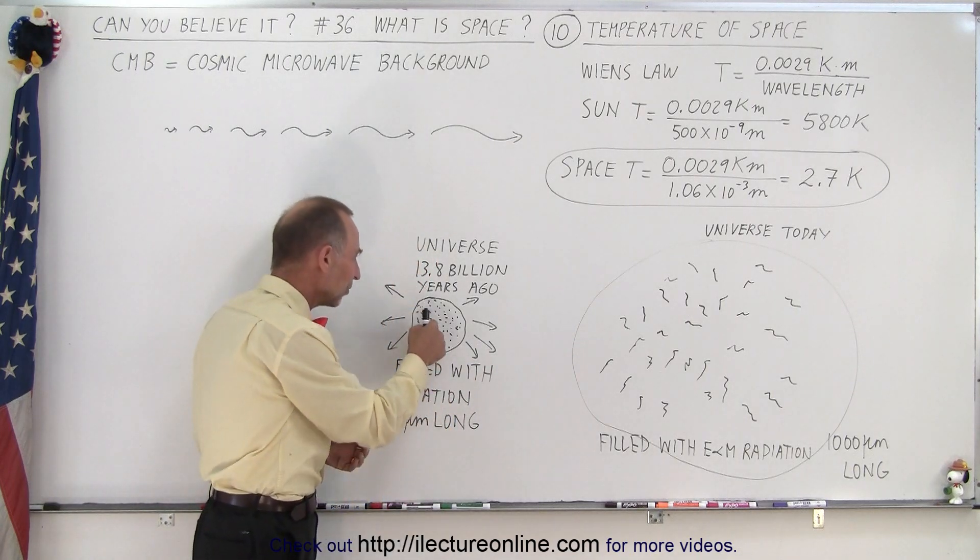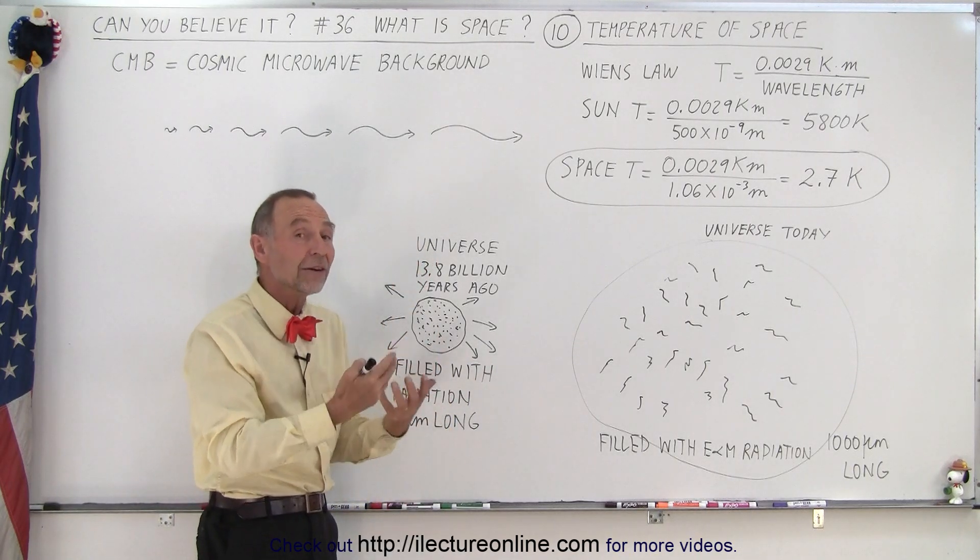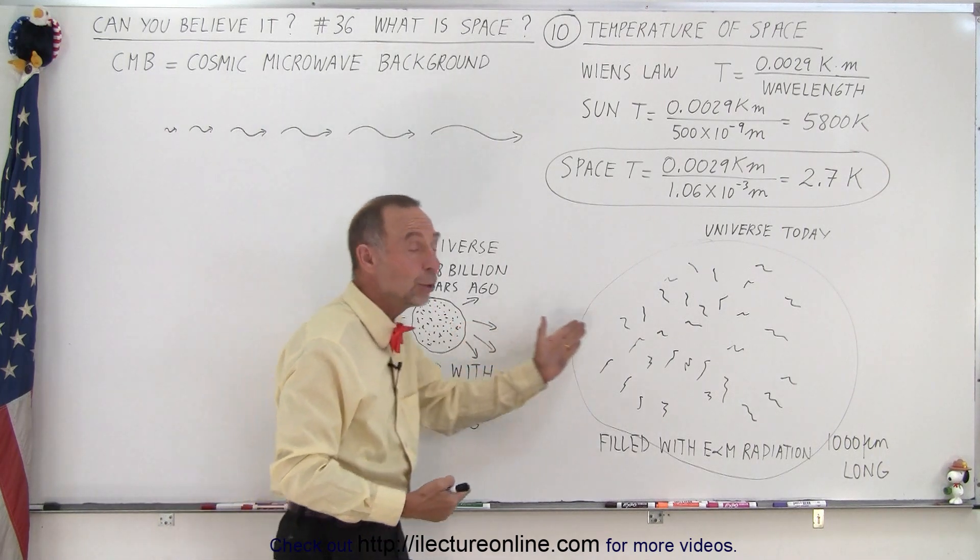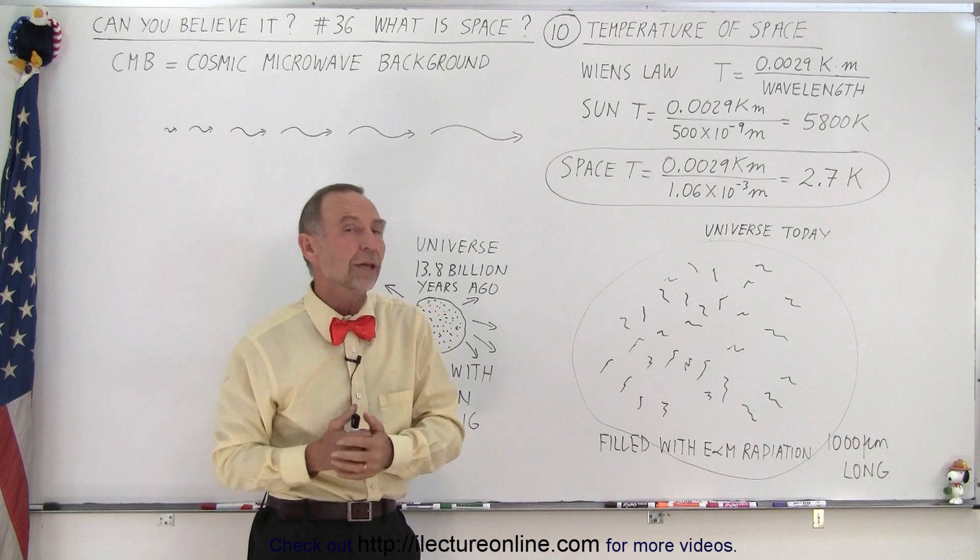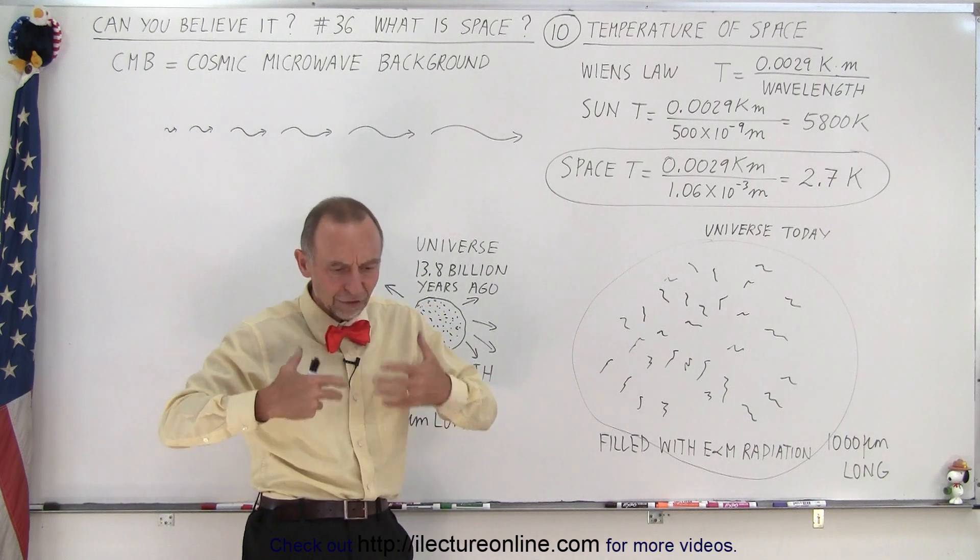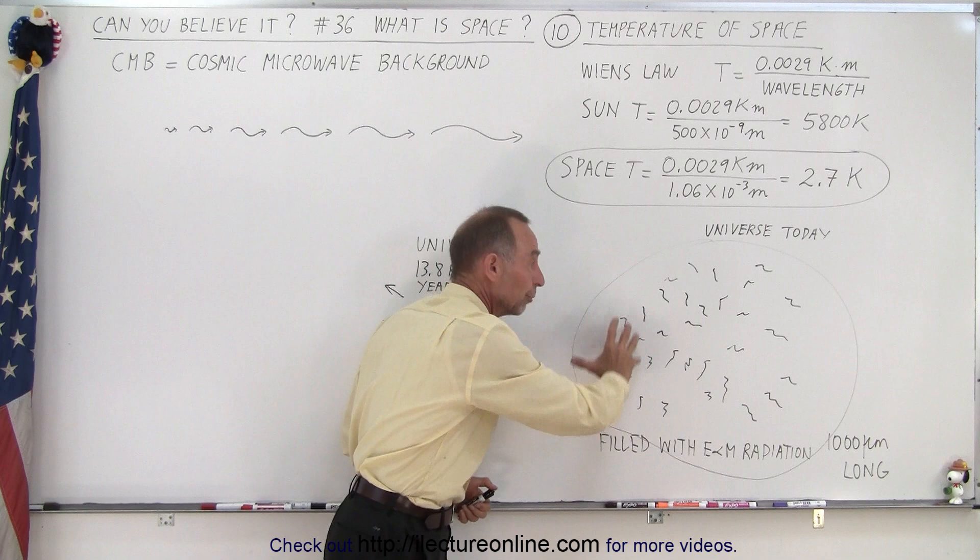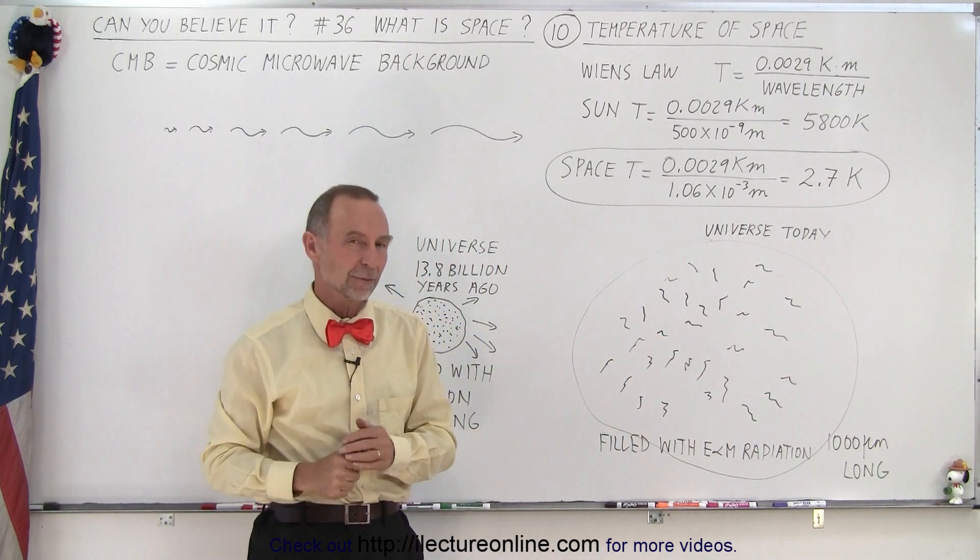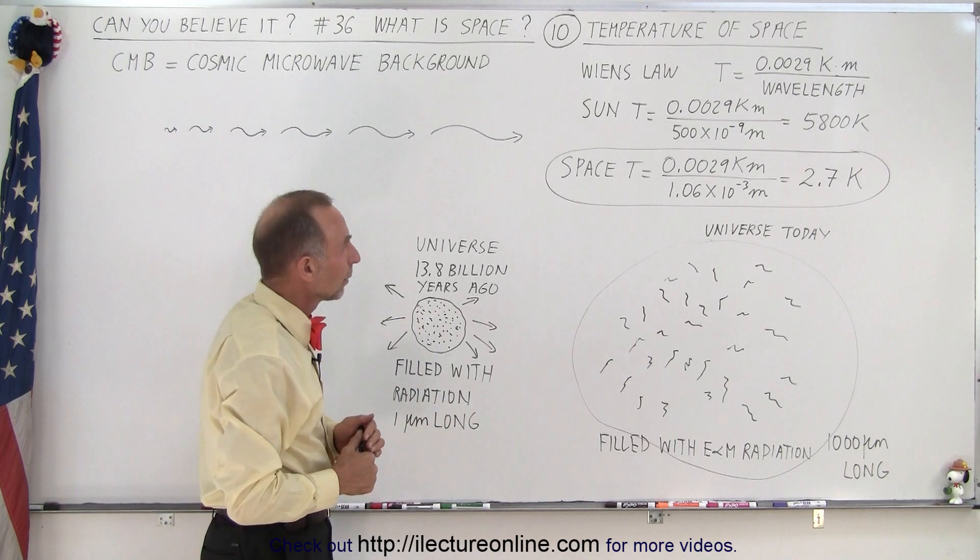So the radiation that was there before was at a much higher temperature. The universe was at a much higher temperature and the universe has been cooling down to the temperature it is today. And again, the temperature of the universe today is determined by all that radiation that fills space.